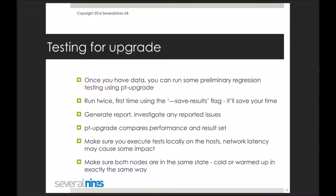Based on those tests, the tool generates reports that you can investigate for any issues found. pt-upgrade compares query performance — if a query is slower or faster, it will be reported. It also checks result set consistency: if the result set is different, if there are more or fewer rows, if rows are in a different order, or if there was an error and no result set at all on the new version, such queries will be reported.